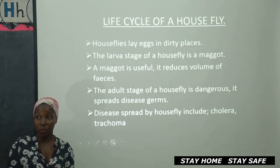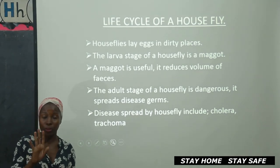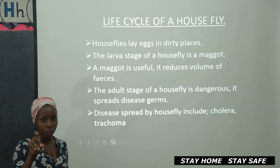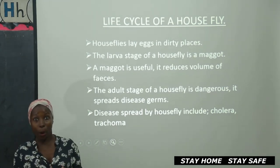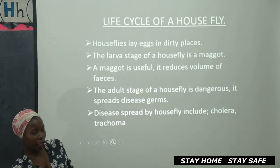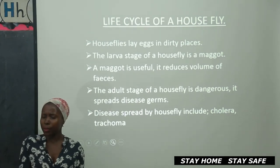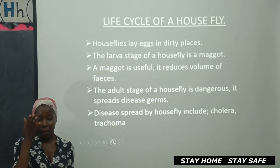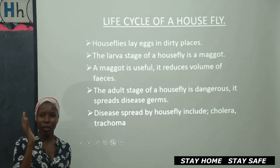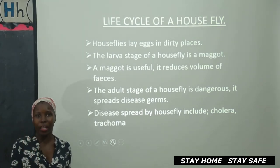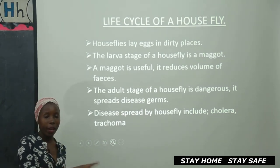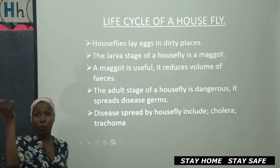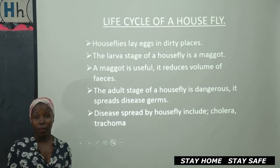The stages the housefly undergoes — we said it undergoes four stages of growth. First the eggs, then the eggs will turn into that wriggly stuff, the maggot. Then the maggot will turn into a pupa, which is very dormant — it does not eat. But after some time, the pupa turns into an adult housefly. And then the adult housefly will fly around spreading diseases — it is very, very dangerous.